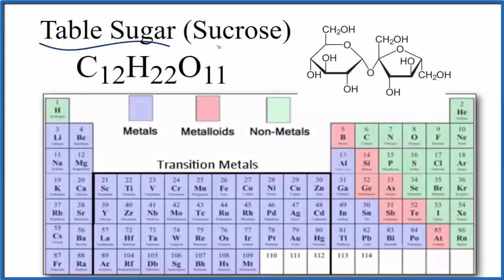To determine whether table sugar, sucrose, is ionic or covalent, let's look at the chemical formula and the periodic table divided into metals, metalloids, and nonmetals.